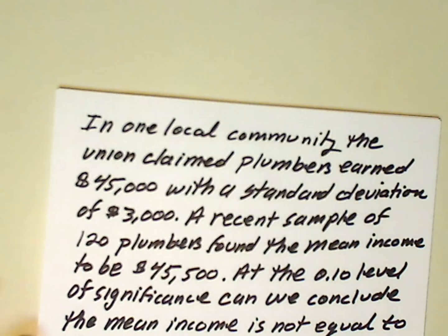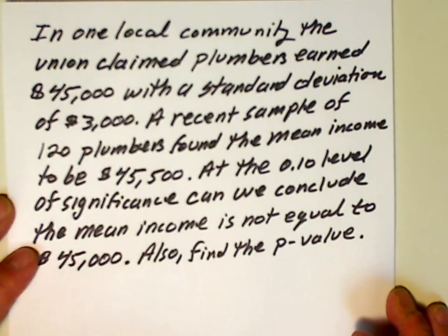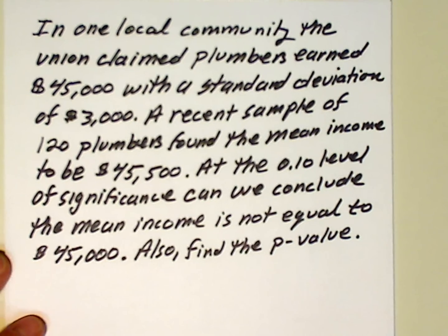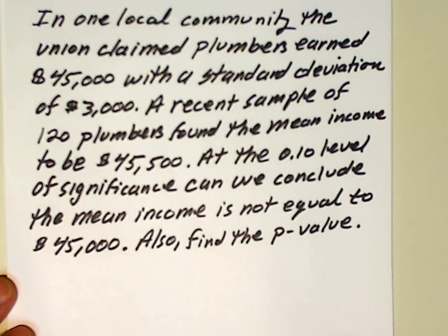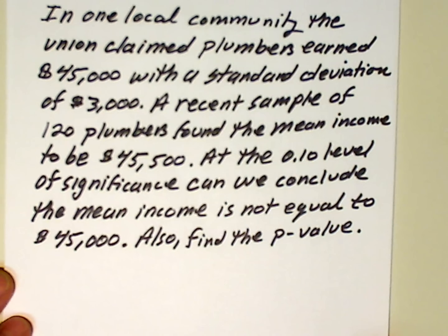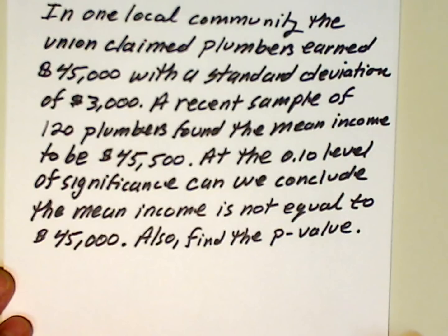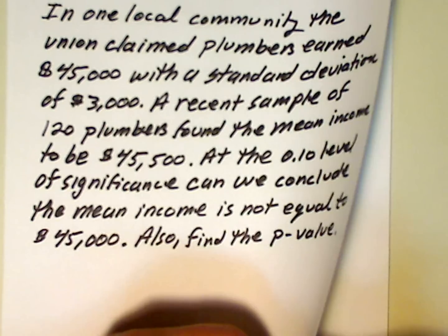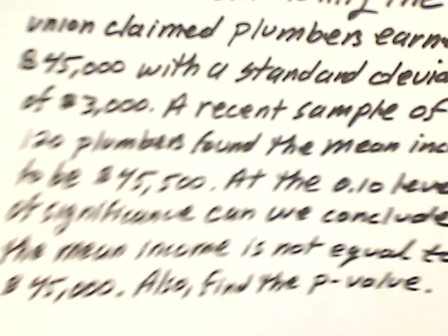Okay, so here's a problem. In one local community, the union claimed plumbers earned $45,000 a year with a standard deviation of $3,000. A recent sample of 120 plumbers found the mean income to be $45,500. And the question asks, at the 10% level of significance, can we conclude the mean income is not equal to $45,000? And we also want to find the p-value. So, let's start, and let's do it the way I'm talking about.